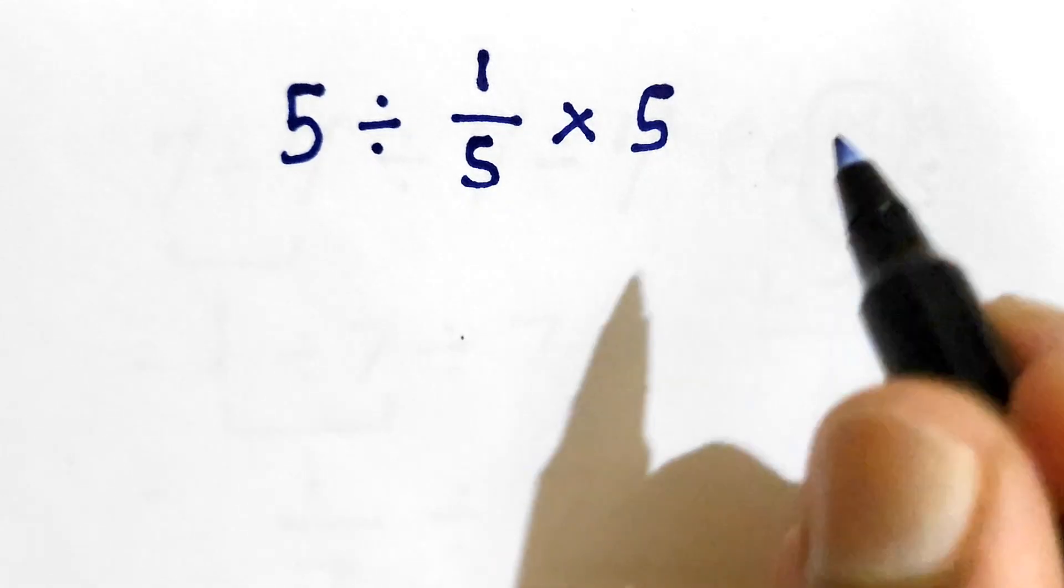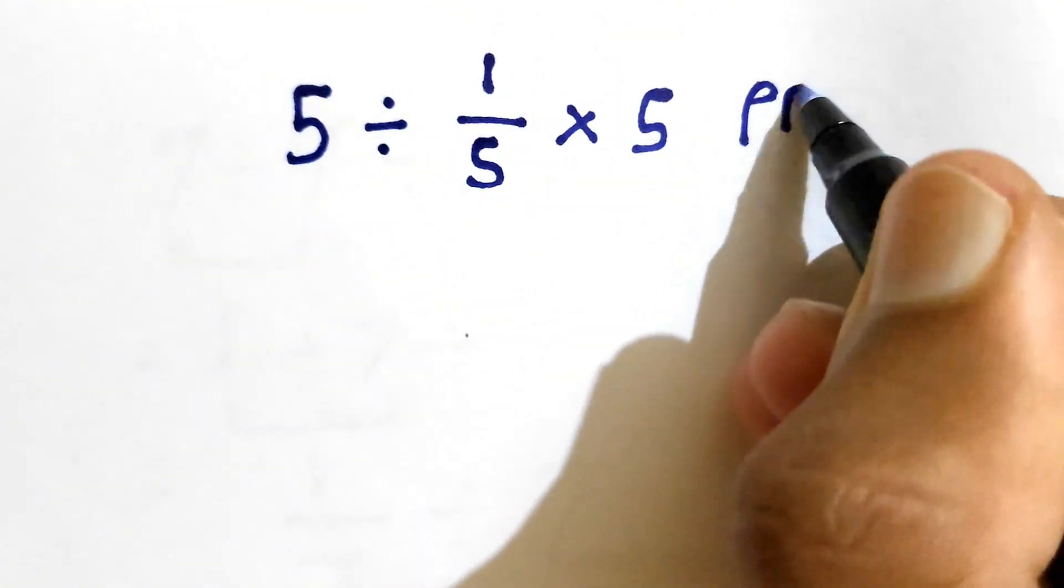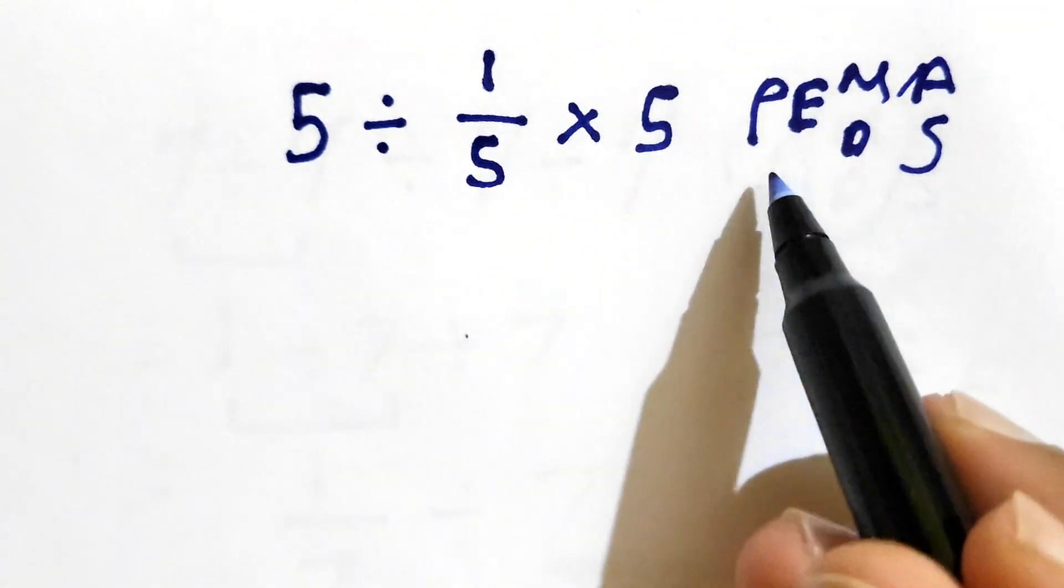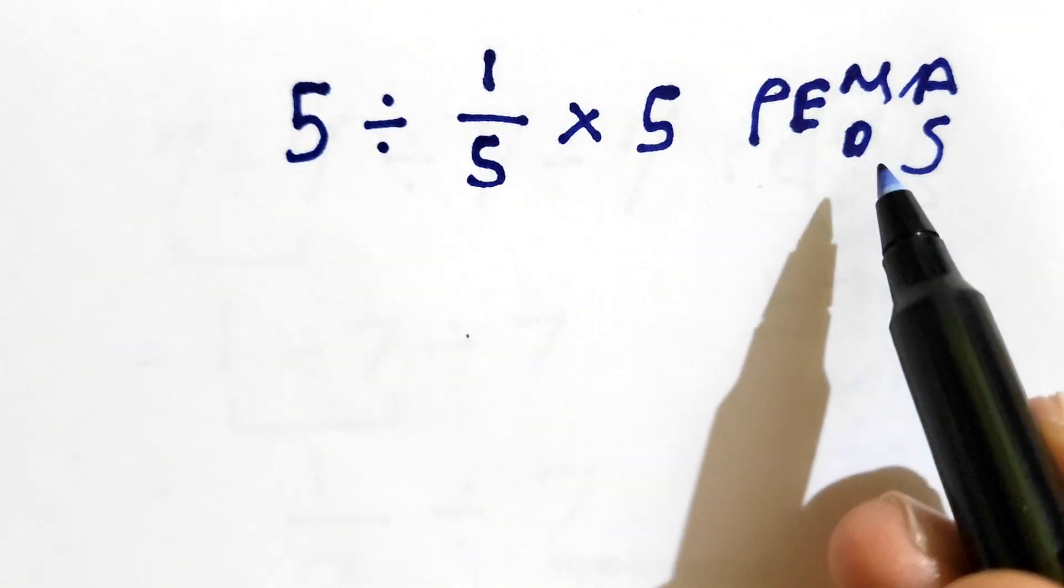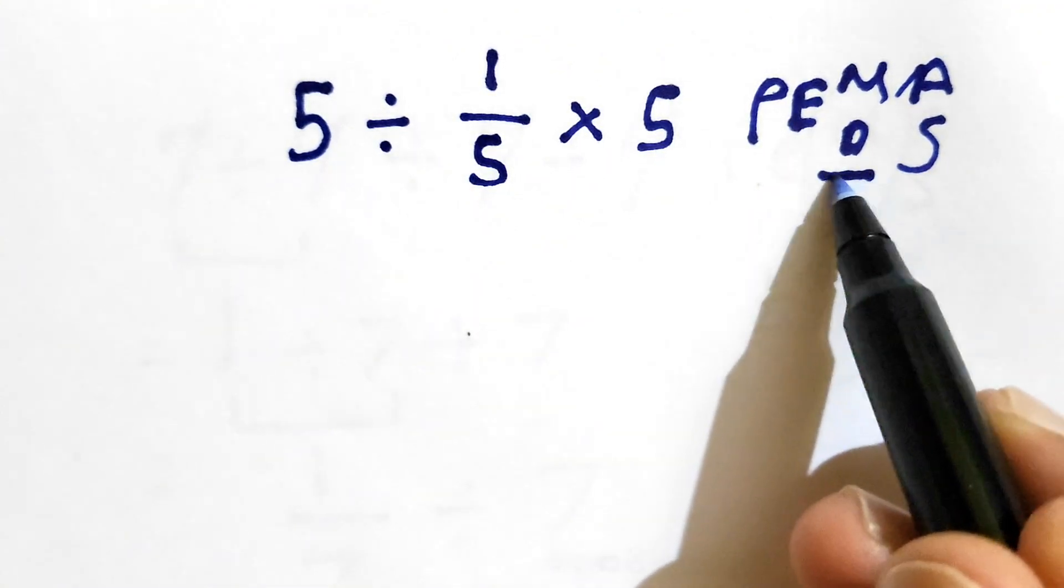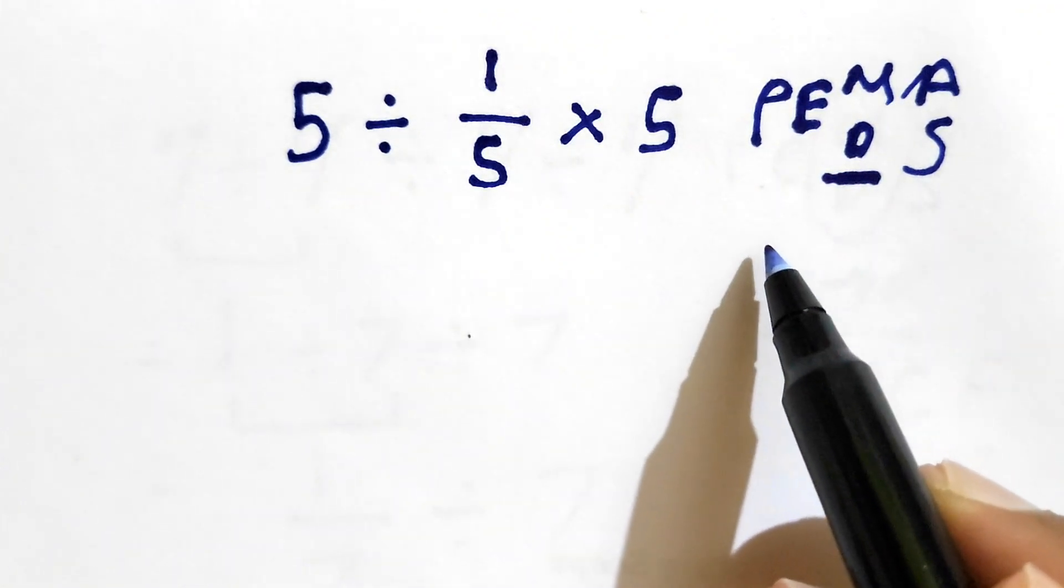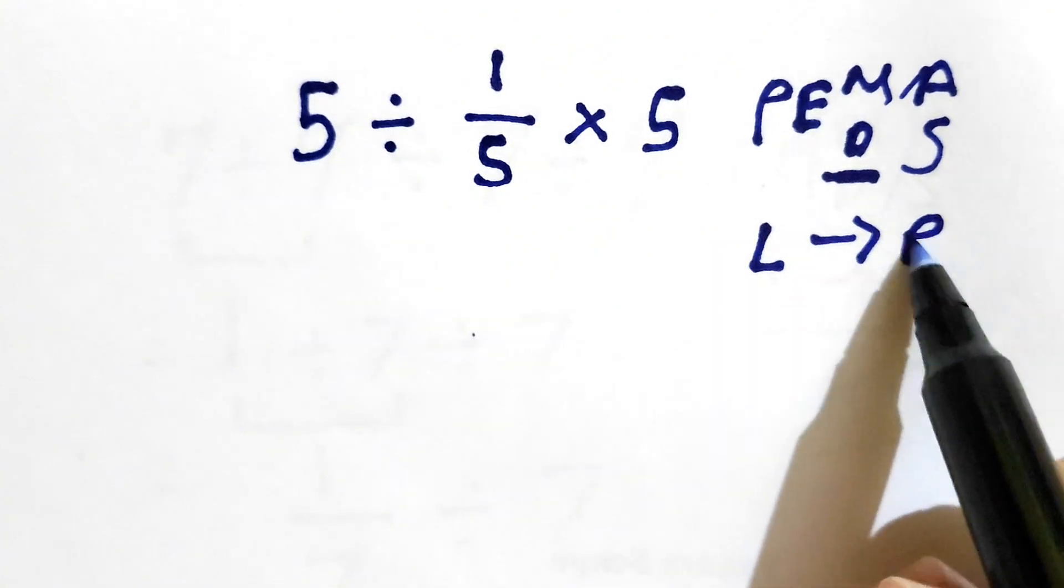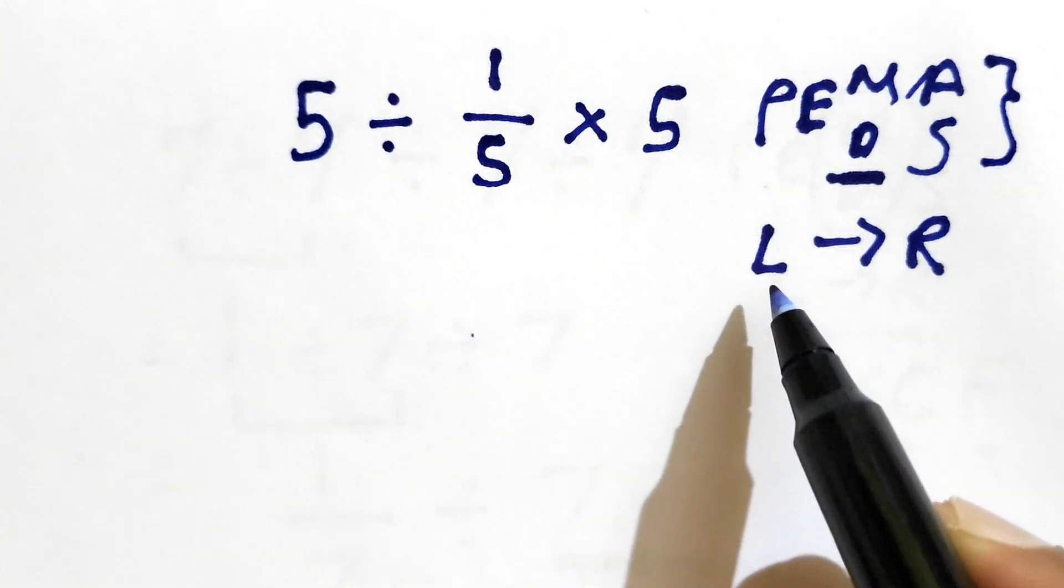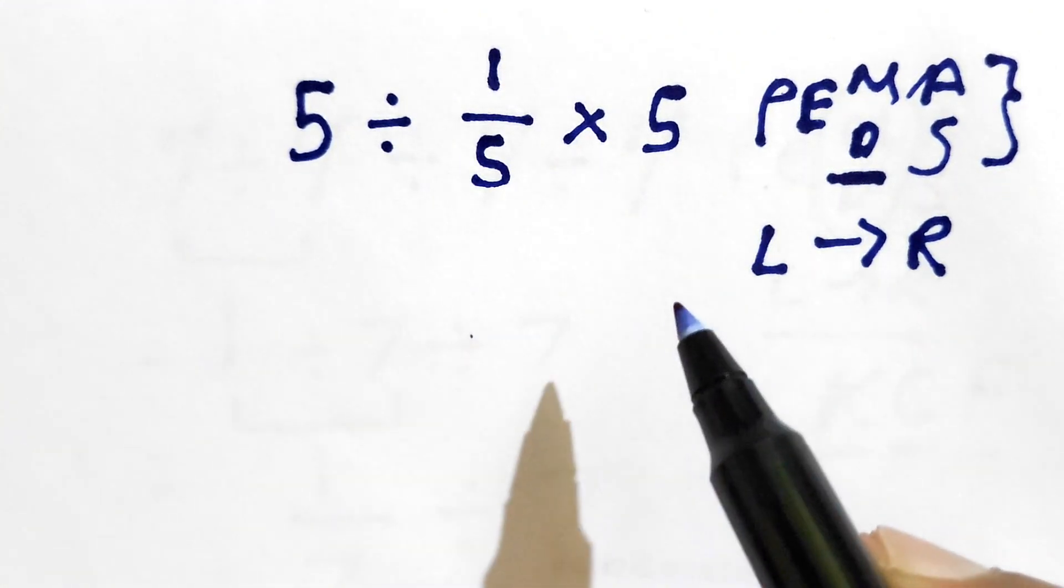Order of operations, which is also called PEMDAS, stands for parenthesis, exponents, multiplication, division, addition, subtraction. The priority of multiplication and division is the same, but we need to go from left side towards the right. The same applies for addition and subtraction - whichever comes from left to right first, we need to solve it.